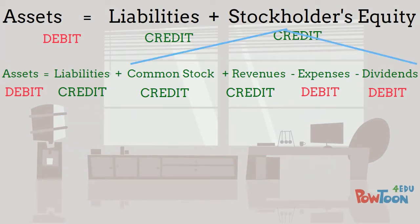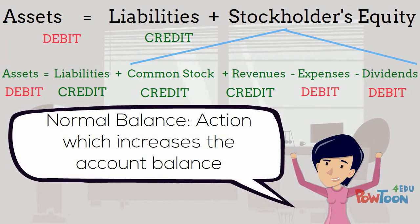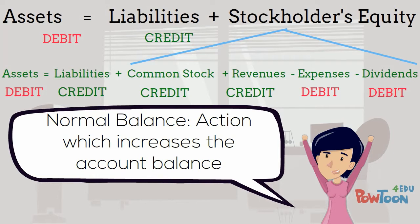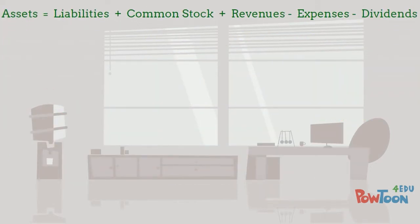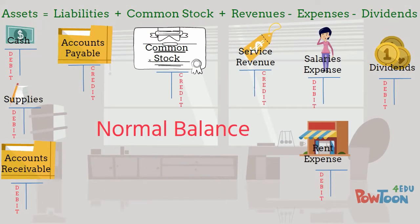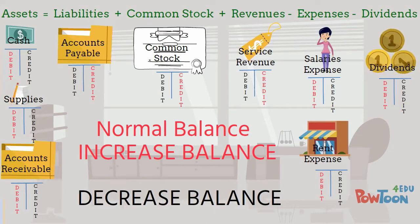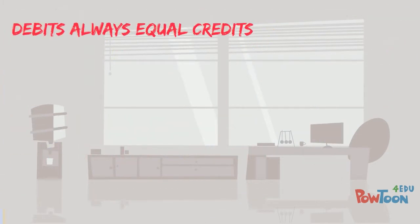Now we have identified the normal balance for all the account types. The normal balance is the action which increases the account, and it's also what status the balance should be in at the end of the period. If we go back and look at the individual accounts in our expanded accounting equation, we can now identify the normal balance for each account. Remember, the normal balance is what increases the balance of that account. If you want to decrease an account, you do the opposite of its normal balance.